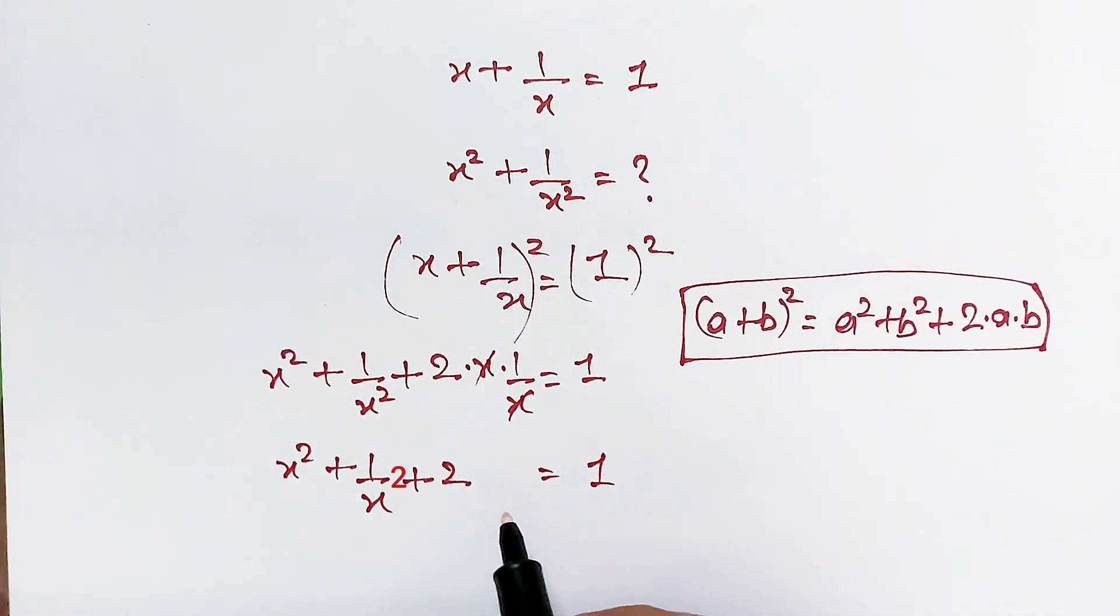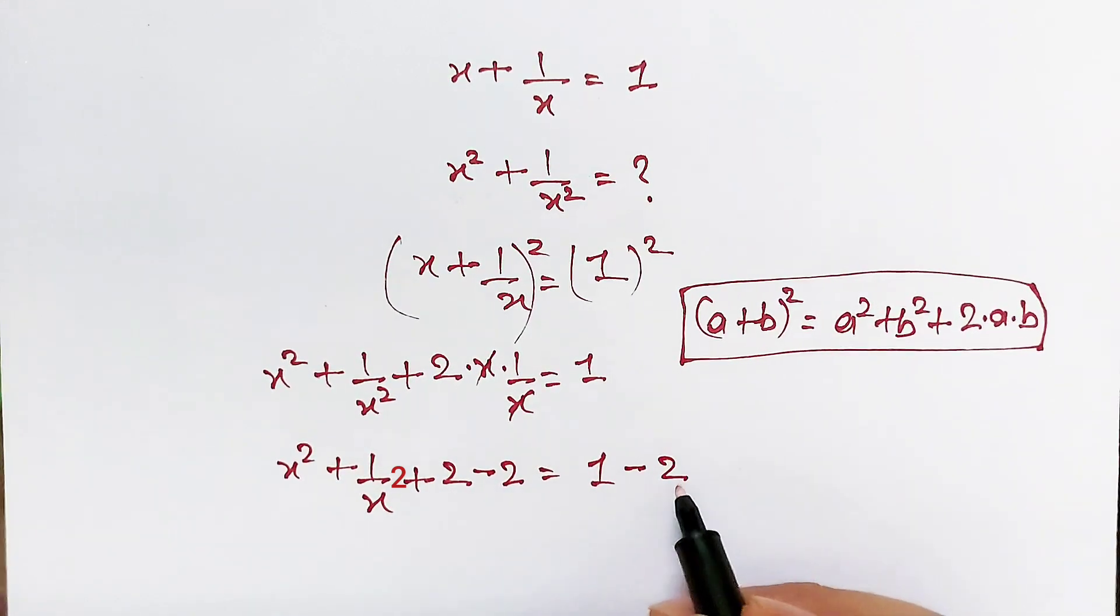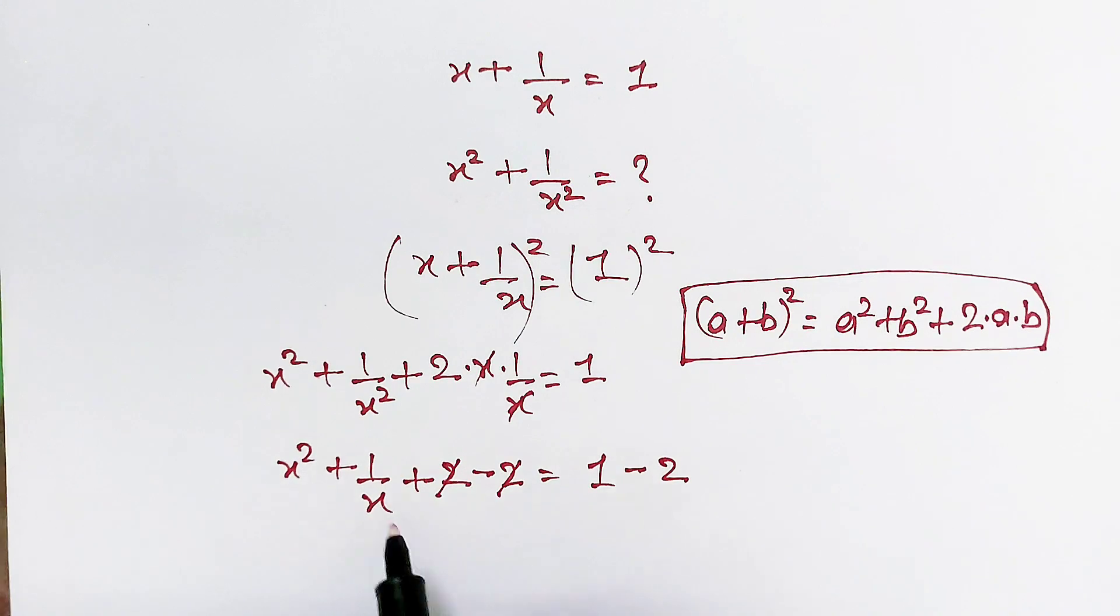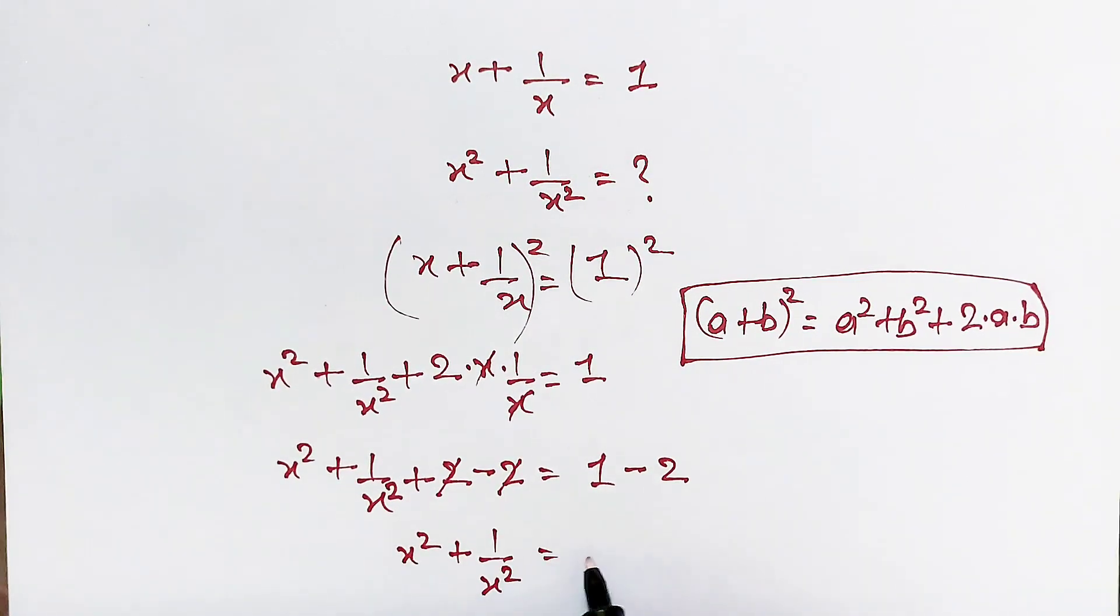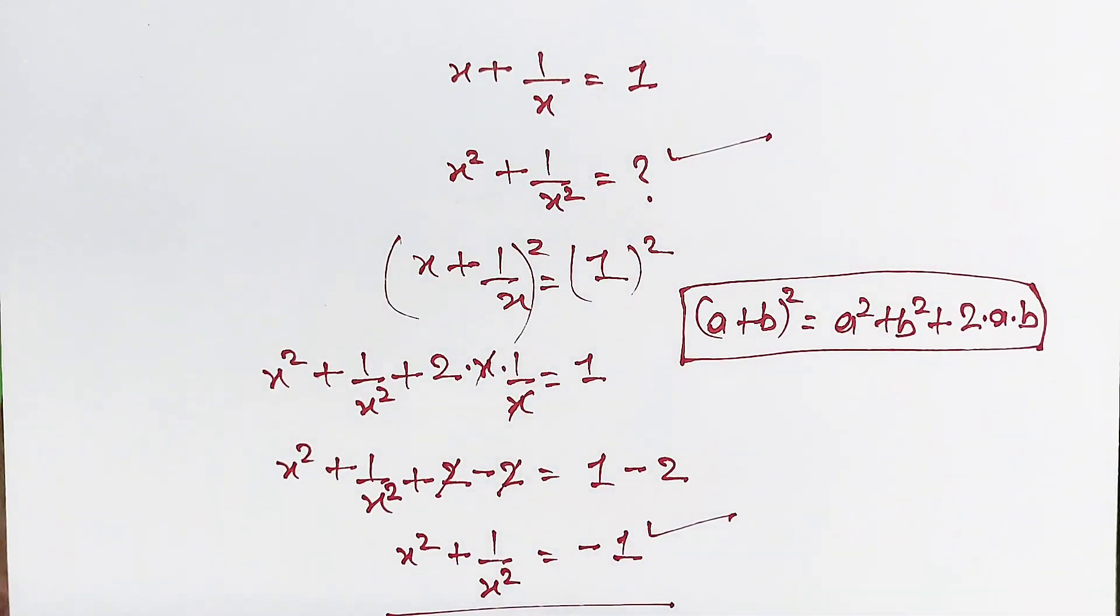Now subtracting 2 from both sides, this 2 cancels this 2, and x square plus 1 over x square equals negative 1. That is the final answer.